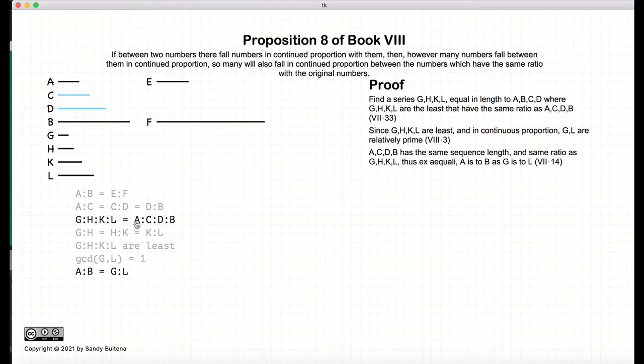Now, g, h, k, l, and a, c, d, b are, by definition, the same length. So because they are the same length, we have basically that the extremities a to b is equal to the ratio of g to l, by Proposition 14 of Book 7.